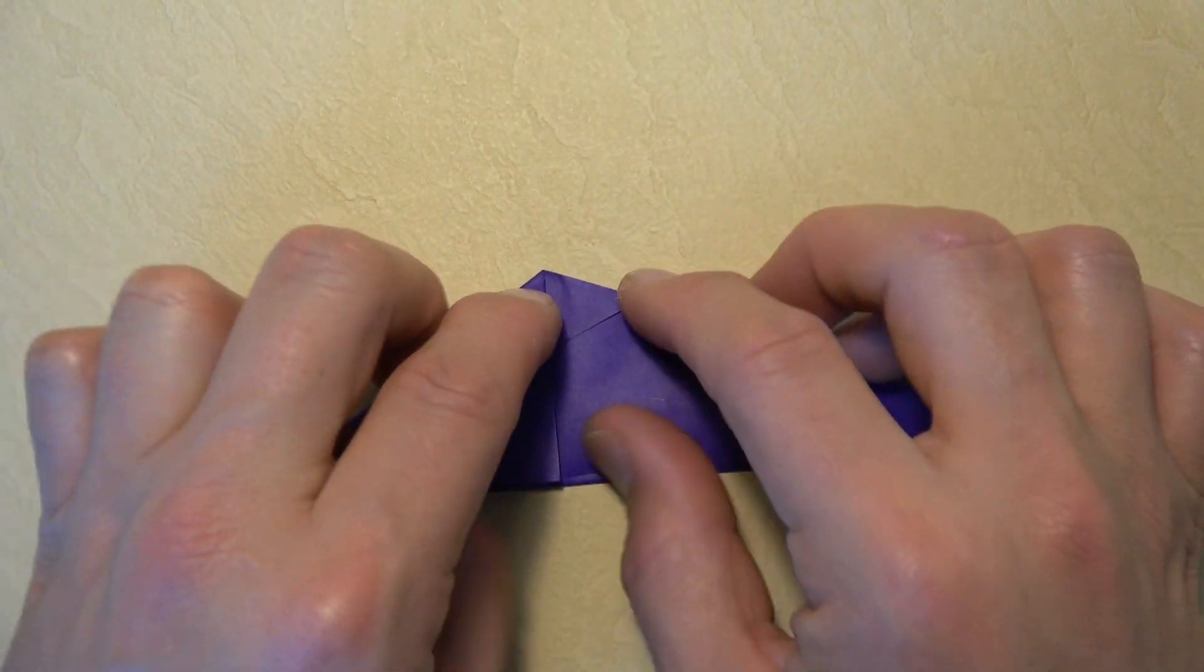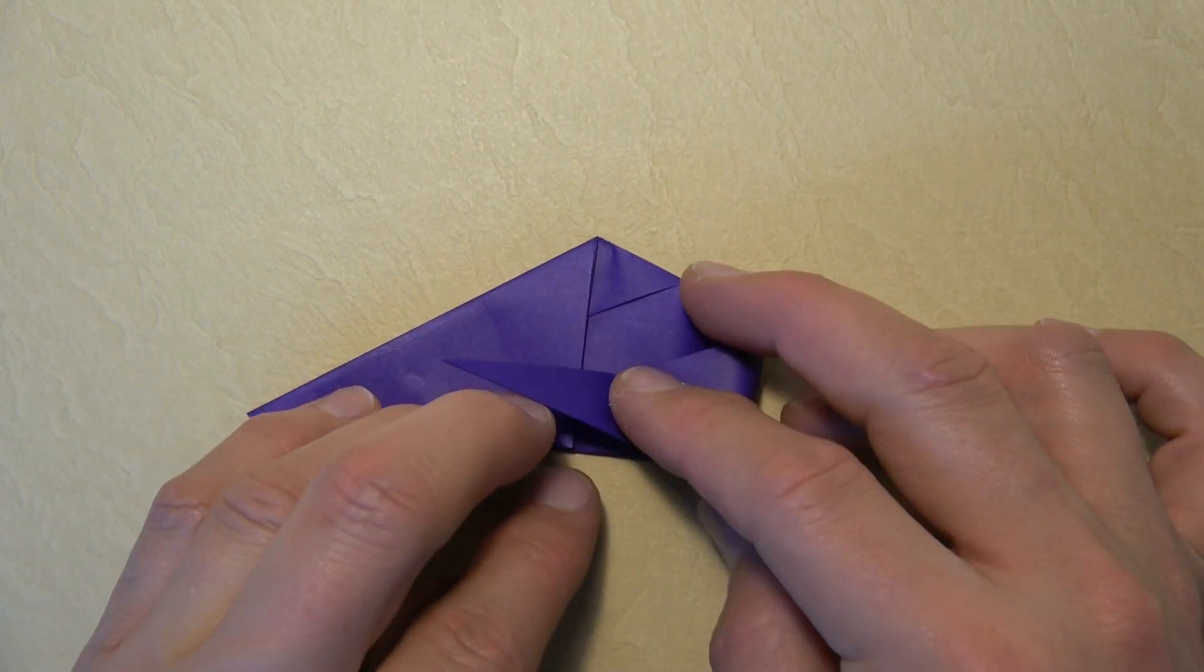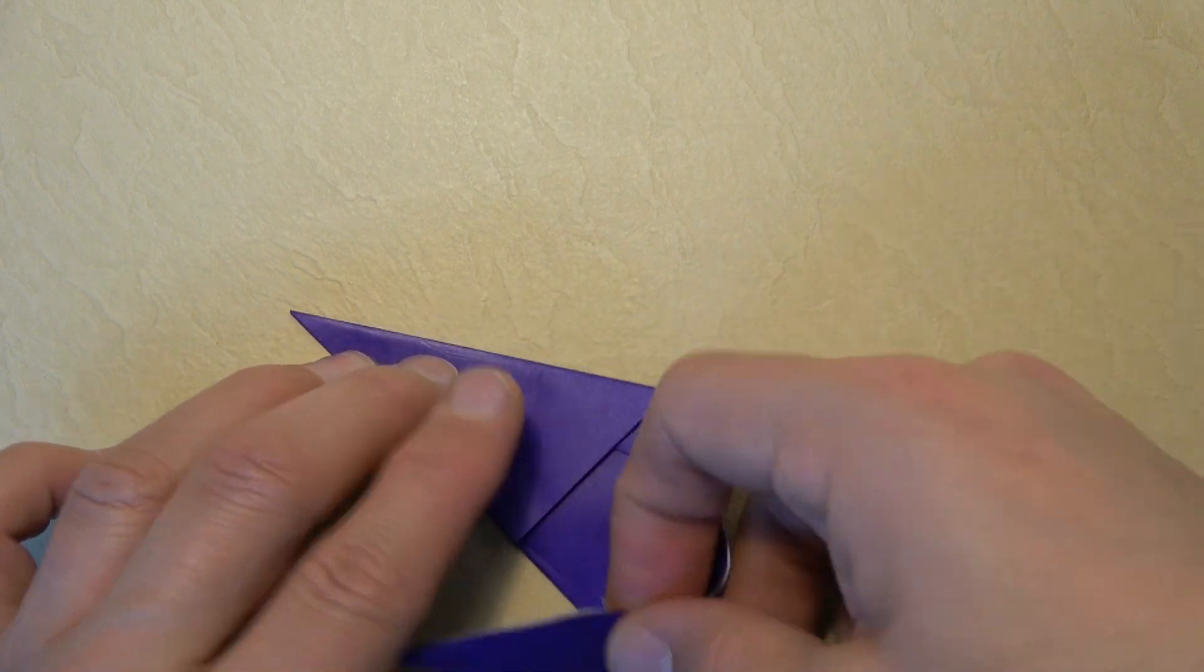And rotate. And now let's fold this flap over. How far? Well, if we fold it really far, it'll be a short shoe.